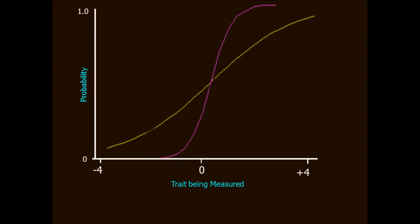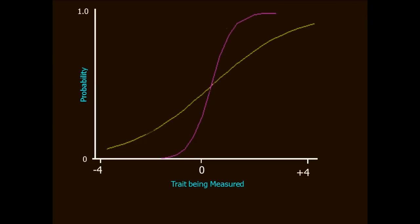Now, take a look at these two items. These items have the same difficulty. For both of them, the point of median probability is around 0.2 logits. But look at the differences in slope between these two items. The item represented by the purple line has a much higher slope. It is far more discriminating.